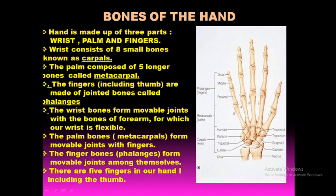The wrist contains eight small bones known as the carpals. The palm consists of five longer bones known as the metacarpals. The fingers — including the thumb, making five in total — are composed of jointed bones known as the phalanges. The wrist forms a movable joint with the forearm bones, making the wrist flexible. The palm bones form movable joints with the fingers, and the phalanges form movable joints amongst themselves.